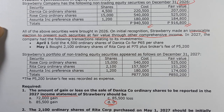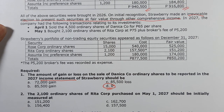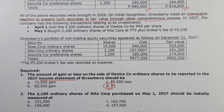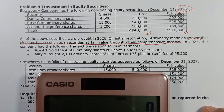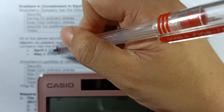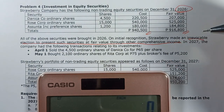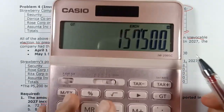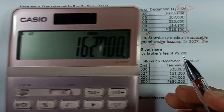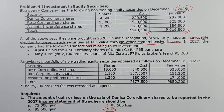Question 2: The 2,100 ordinary shares of Rita Corporation purchased on May 1, 2027 should be initially measured at what amount? Kapag FVOCI tayo, initial measurement = fair value plus transaction cost. We bought 2,100 shares of Rita Corporation at 75 pesos plus broker's fee of 5,200. So 2,100 times 75 plus 5,200 = 157,500 + 5,200 = 162,700. Therefore choice Charlie is the final answer.